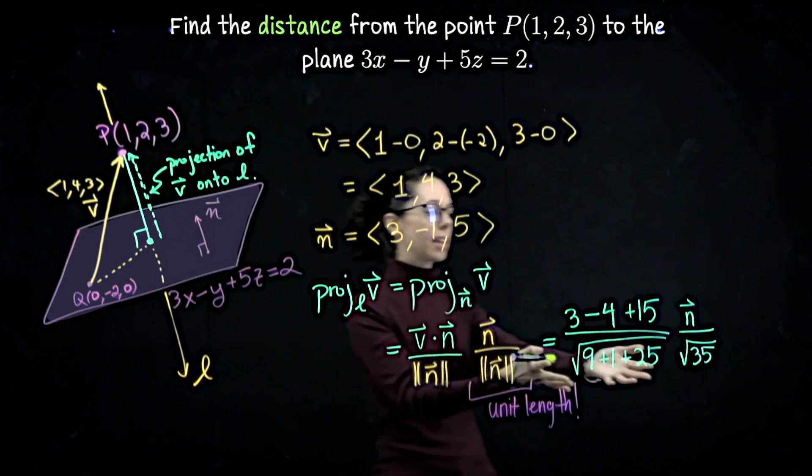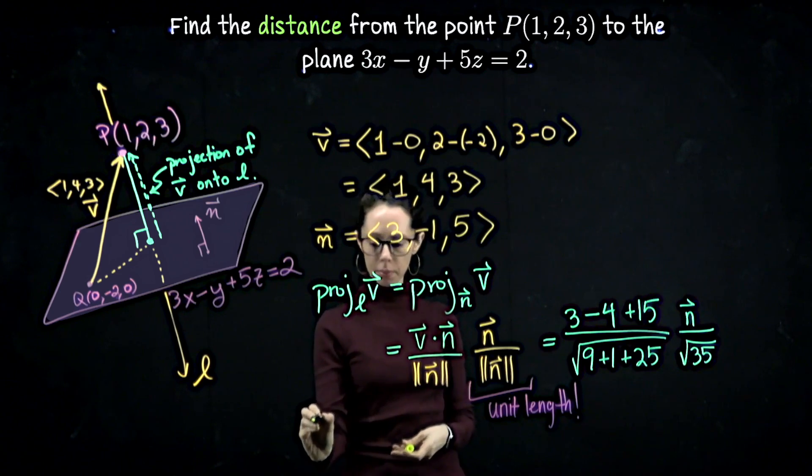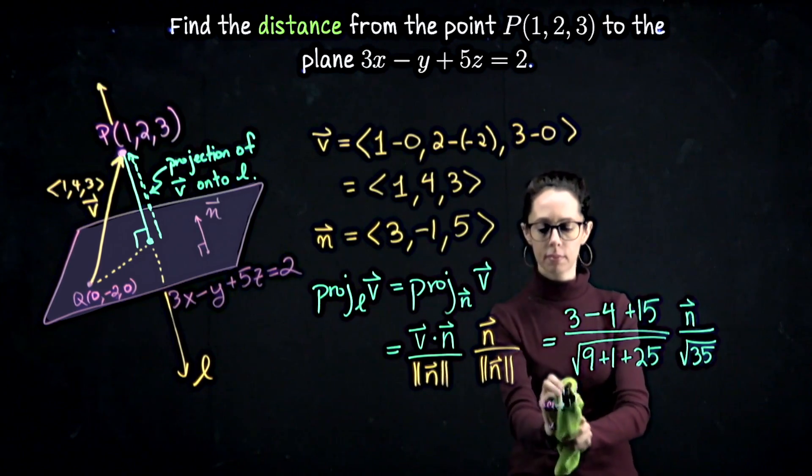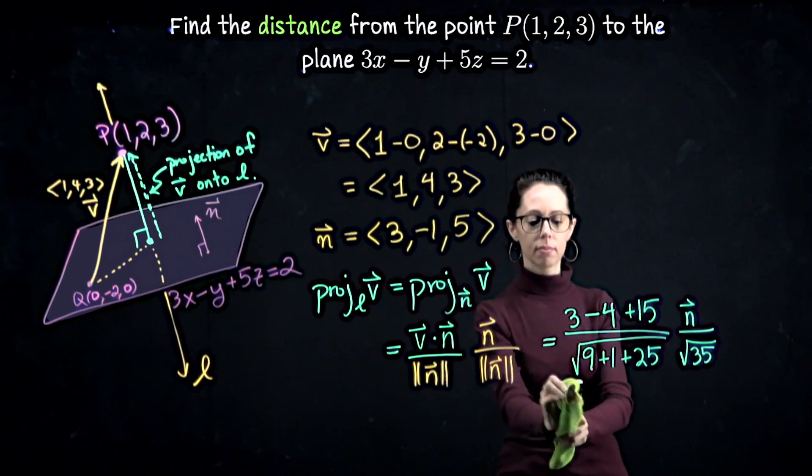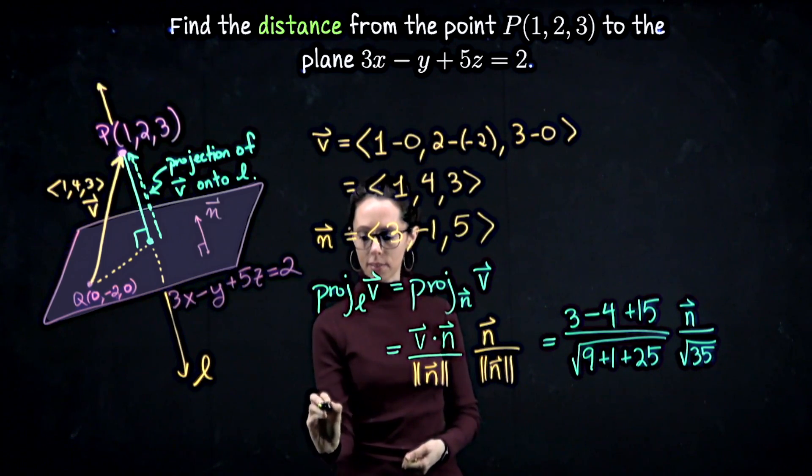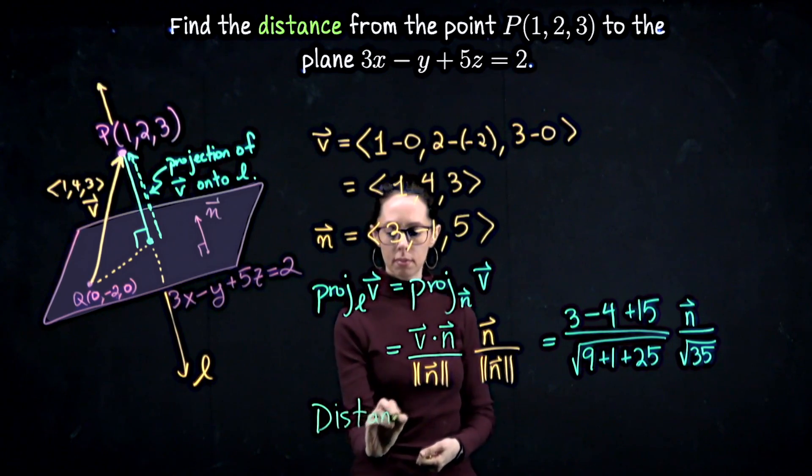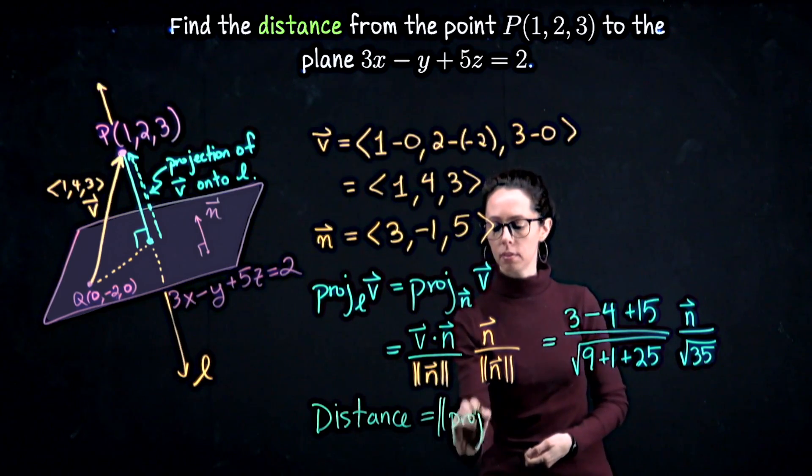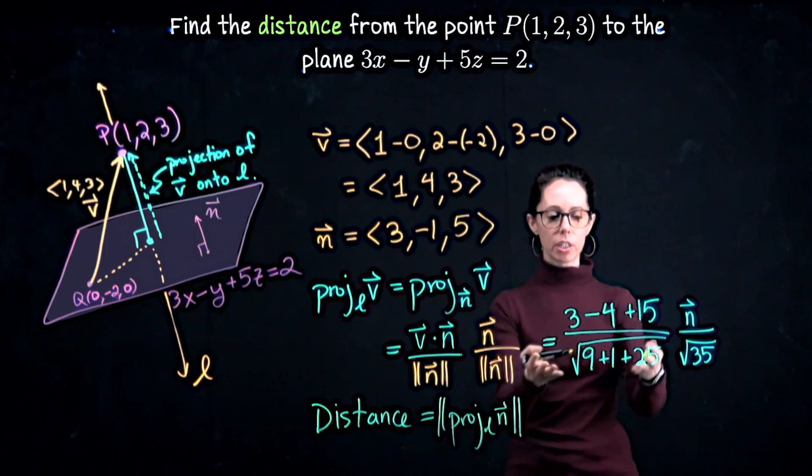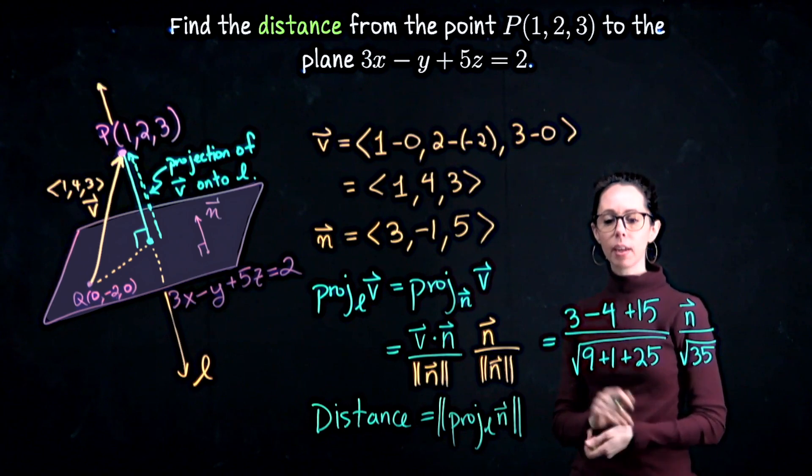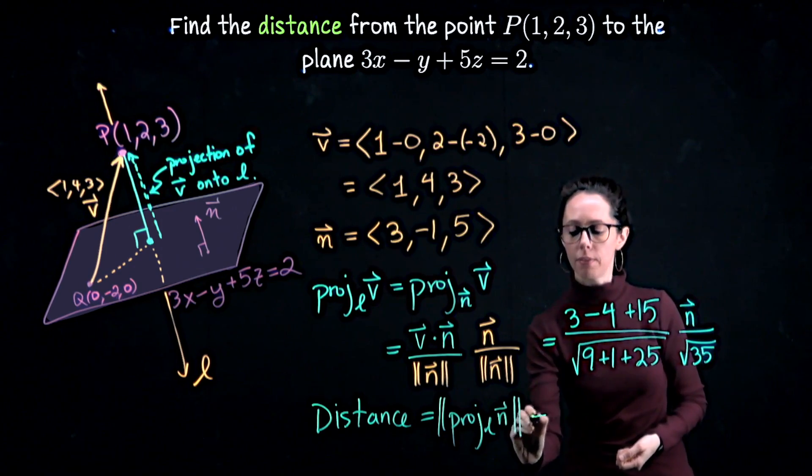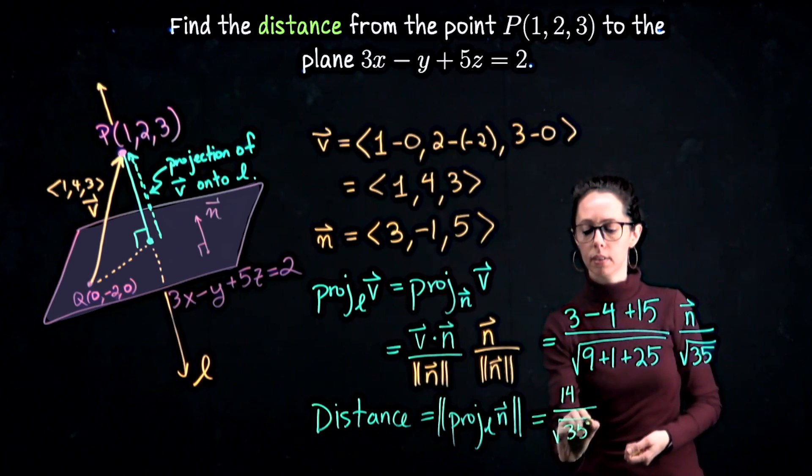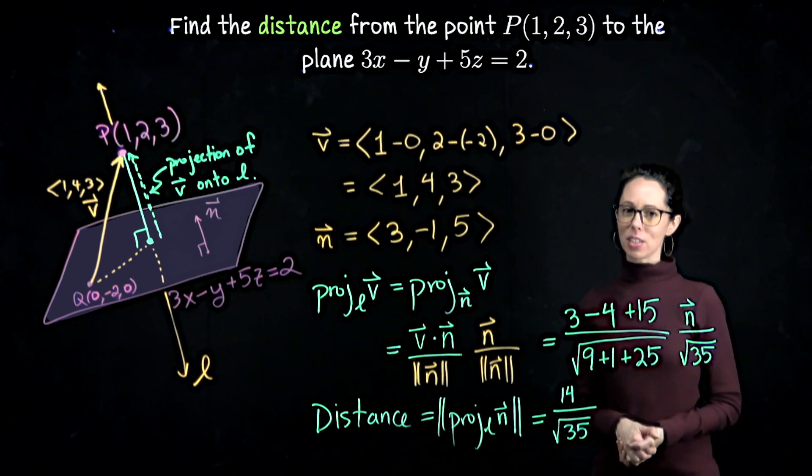So to finish the problem, let me erase this comment here just to make sure I have enough room. All right, so our distance is the length of this projection, which is the size, the absolute value of the scalar. So we have -1 + 15 is going to be 14 over the square root of 35. Now we found the distance from that point to the plane.